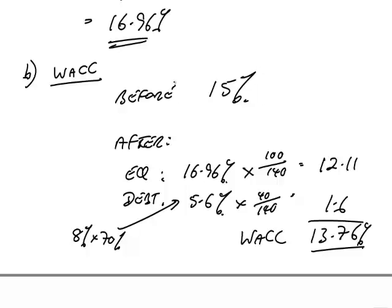Who cares about 0.05% — you do it to the nearest percent anyway. The point was: because they came up with that formula for how the cost of equity would change, you can see for yourself the end result is that the weighted average fell. As you add more and more gearing, the cost of equity will be higher and higher, but the weighted average will get lower and lower.